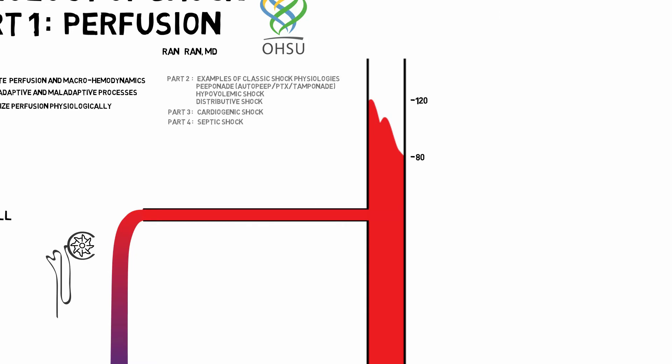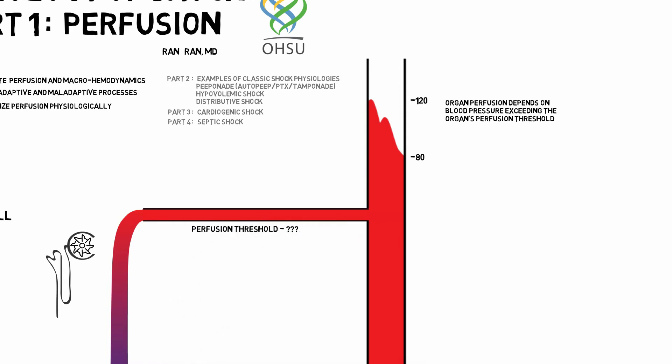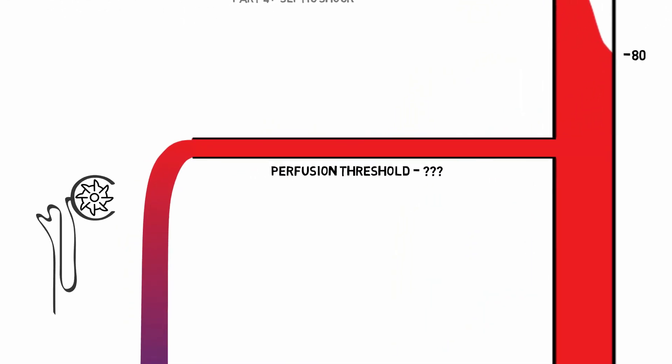This is why we use hypotension as a surrogate for hypoperfusion. However, it's hard to universally define a threshold for hypotension, because a critical perfusion threshold is not easily measured. It varies from person to person, organ to organ, different regions of the same organ, and different physiologic states. However, a few general principles apply.